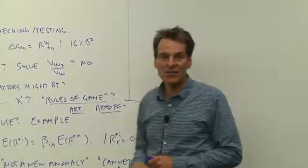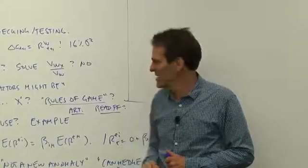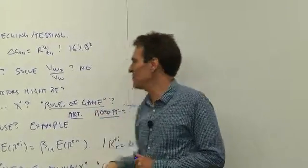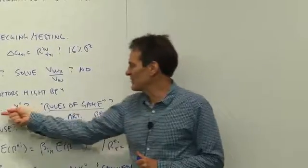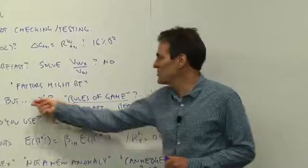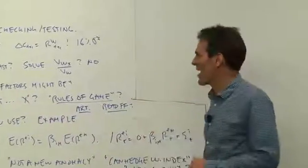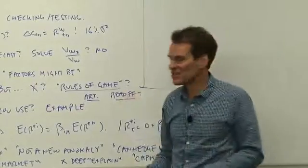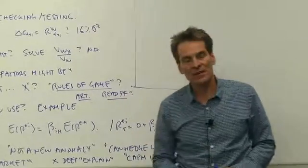One of our next tasks will be to look back at the Fama and French paper and think hard about what rules of the game are they employing to keep themselves from finding an ex-post mean variance efficient portfolio and to convince you that they've run through adequate hoops, that their model is an explanation, at least for the phenomenon that they want to address.